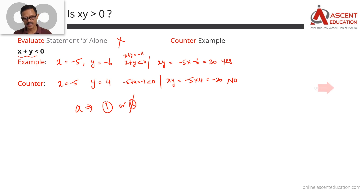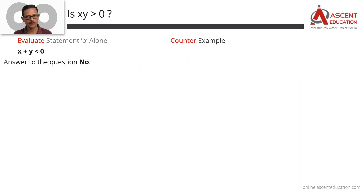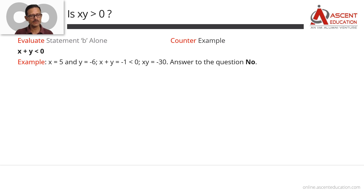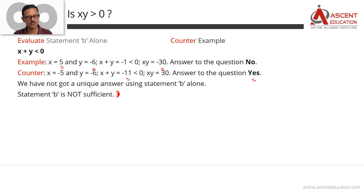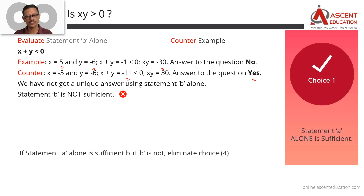Since Statement B is not sufficient, we cannot go with answer option 4. Our answer options were narrowed down to 1 or 4; since B is not sufficient, the final answer is choice 1 — Statement A alone is sufficient. Because we did not get a conclusive answer from Statement B, Statement B is not sufficient, and the final answer is choice 1.